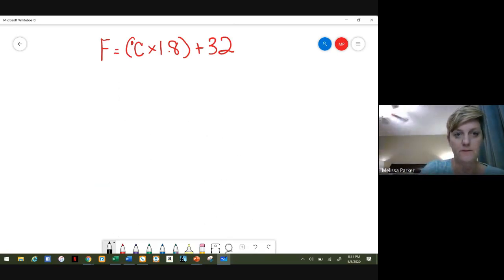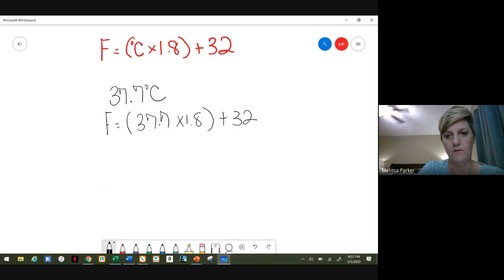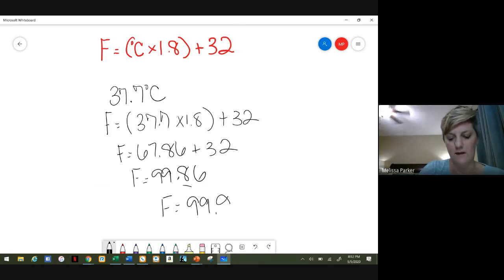When you're doing your math problems, it might be a good idea to just do it twice to make sure you get the same answer. All right, we're going to plug in 37.7 times 1.8 plus 32. So 37.7 times 1.8, then you get 67.86 plus 32. If you add that together, you get 99.86. If we round to the nearest tenth, we'd have 99.9 degrees Fahrenheit.